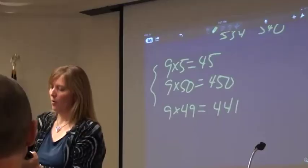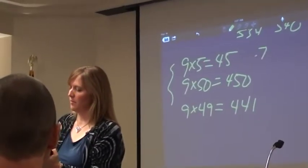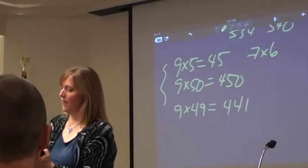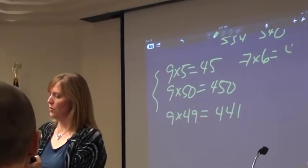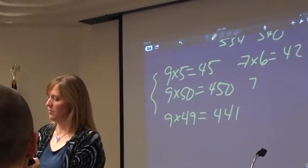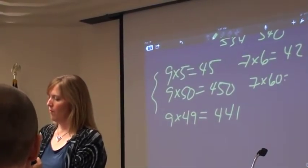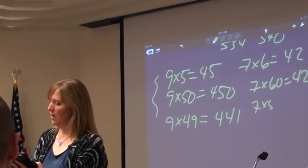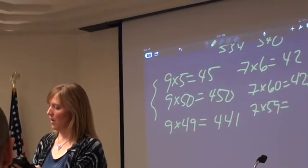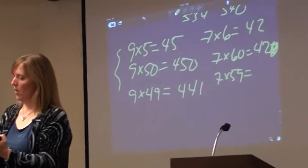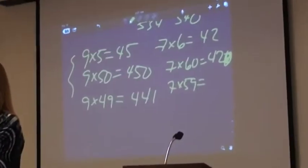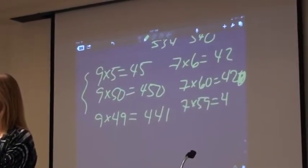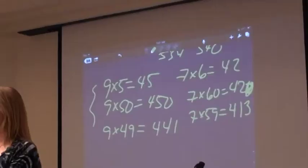Last but not least, what if I were to ask you for 7 times 6? Everybody yell out loud: 42. So what is 7 times 60? 420. So what is 7 times 59? 420 minus 7 is 413.